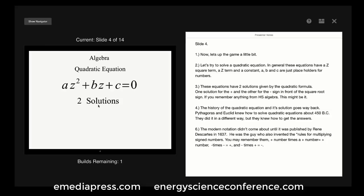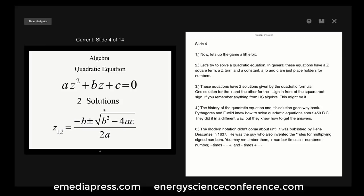Now let's up the game a little bit and try to solve a quadratic equation. In general, these equations have a Z-squared term, a Z term, and a constant. The coefficients a, b, and c are just placeholders for real numbers. In general, these equations have two solutions given by the quadratic formula. If you remember anything about high school algebra, this might be it.